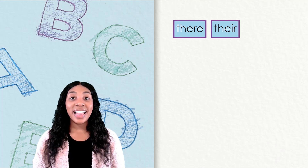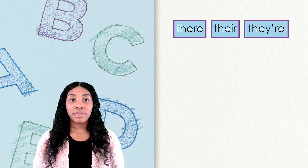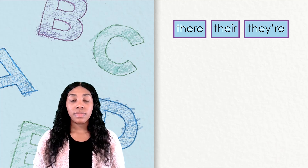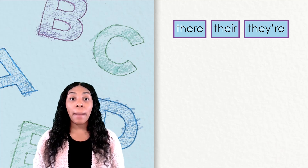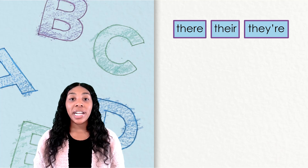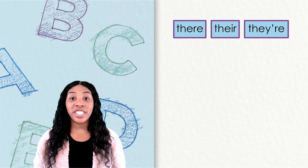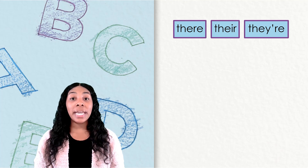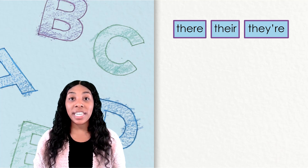What does this 'they're' mean? T-h-e-y apostrophe r-e means 'they are.' Remember that we learned about contractions with r-e. A sentence with this spelling might be: They're going to the beach.